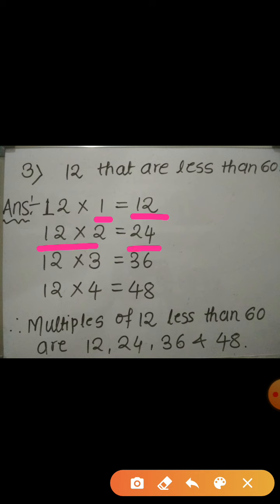12, 2's are 24. 12, 3's are 36. 12, 4's are 48. If we continue this, the next multiple will be 60. 12, 5's are 60. But here we want the multiples less than 60, right?